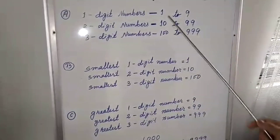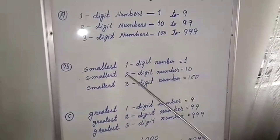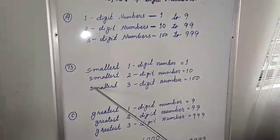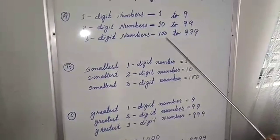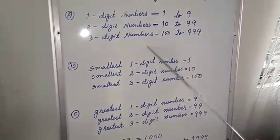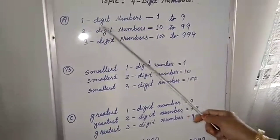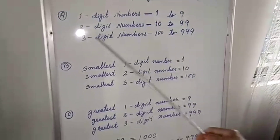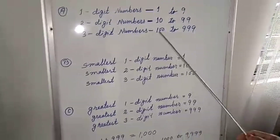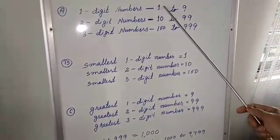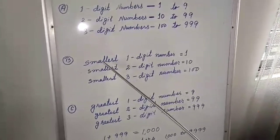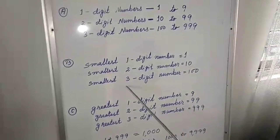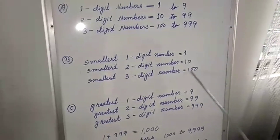So, to summarize: the smallest 1-digit number is 1, the smallest 2-digit number is 10, and the smallest 3-digit number is 100.